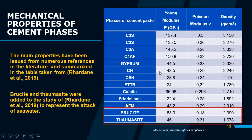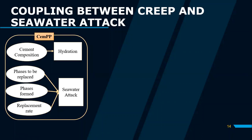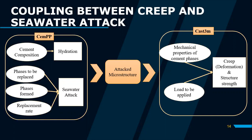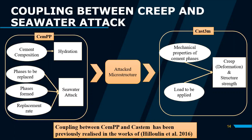The coupling between creep and seawater attack works as follows. We start with CEMPP, where we define the cement composition, the phase to be replaced, the replacing phase, and the replacement rate. This gives a coupling between hydration and seawater at the CEMPP level, and the output is an attacked microstructure. This microstructure is then used as input to CASTEM, where we define the load and the mechanical properties of the cement phases to calculate the strength and creep. This coupling between CEMPP and CASTEM was done previously in the works of Julien in 2016.